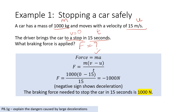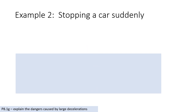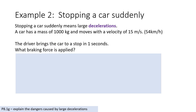Now, the previous slide was titled 'stopping a car safely,' and this one is 'stopping a car suddenly.' We have the same car — 1000 kilograms moving at 15 meters per second. In the previous question, the driver brought the car to stop in 15 seconds, but here the driver is bringing the car to stop in one second. So there is a sudden stop.